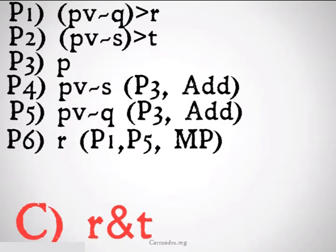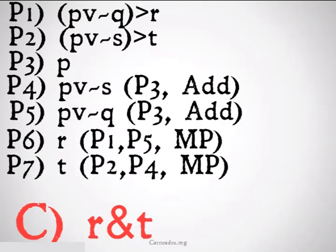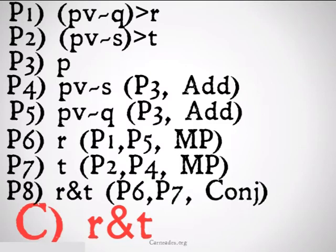Premise six, we conclude R from one and five modus ponens. Premise seven, we conclude T from two and four modus ponens once again. And finally, to bring them together and get to exactly what we want in the conclusion, we conclude R and T from premises six, premise seven, conjunction.